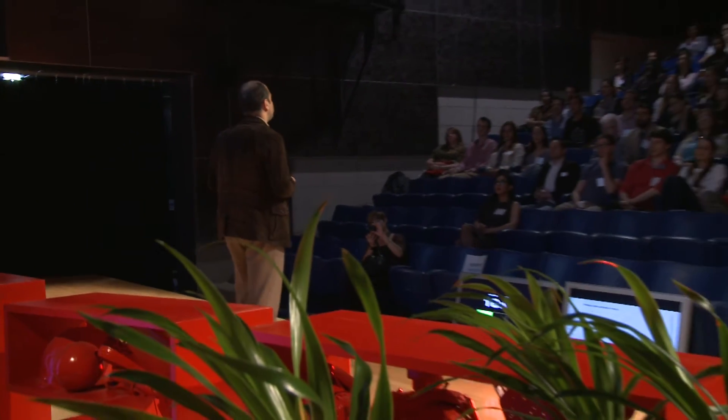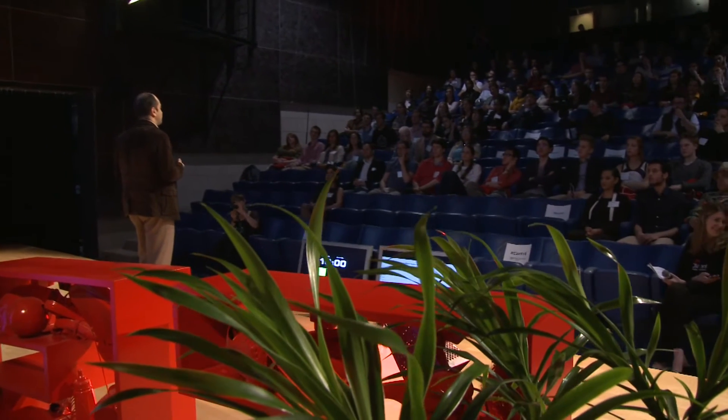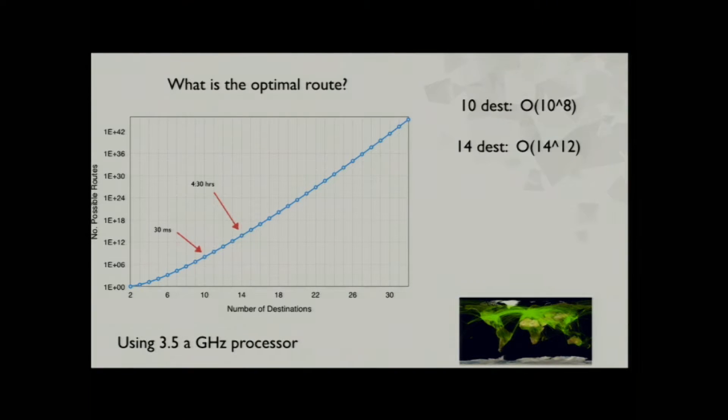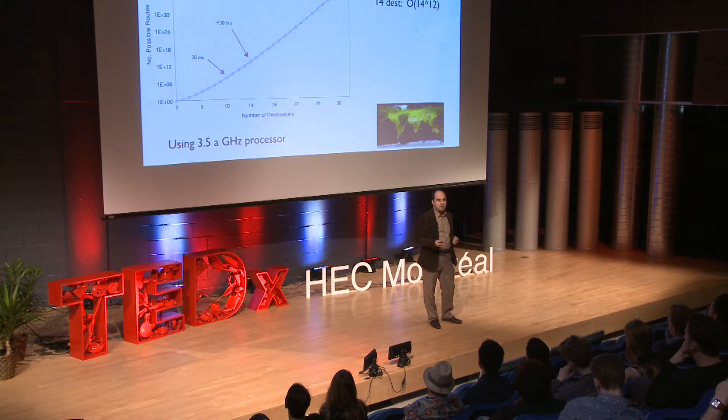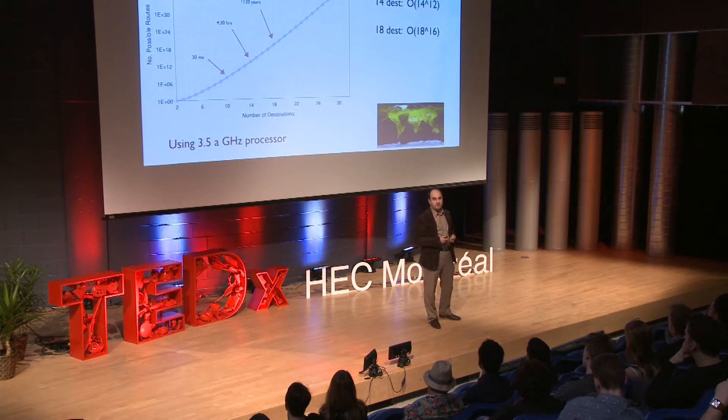This graph shows the number of possible routes an aircraft can fly for a certain number of destinations. If you're interested to optimize the flight for 10 destinations, you have to check 10 to the power of 8 possibilities. On a normal computer at home, that takes about 30 milliseconds — pretty fast. But with 14 destinations, the computational cost goes from 30 milliseconds to 4 and a half hours. For 18 destinations, it will take more than 11 centuries to find the optimal answer.